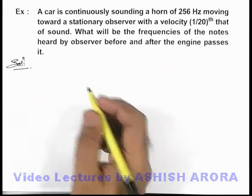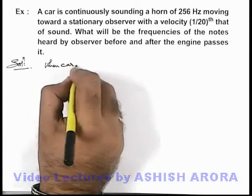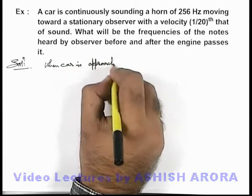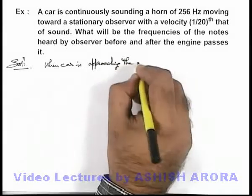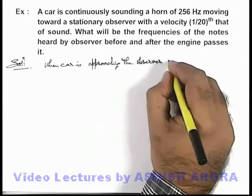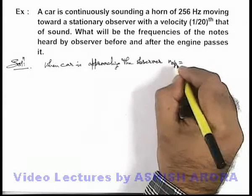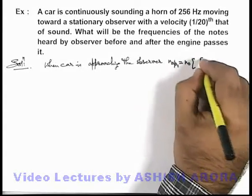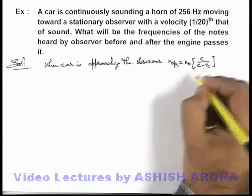Now in this situation, we can directly write: when the car is approaching the observer, we can easily find out the apparent frequency which it'll hear. That can be written as n₀c/(c - v_car).